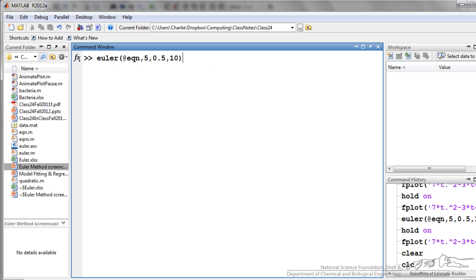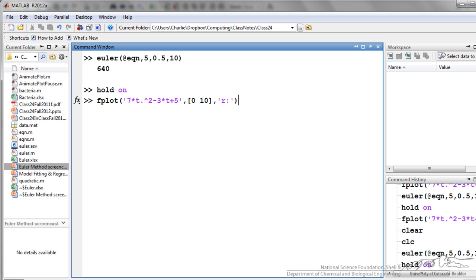I can type into the command window: Euler at our equation, 5, which is our initial function value. We are going to do a time step of 0.5, which is relatively small, and I have got a final time of 10. I can run this function, I can plot it.